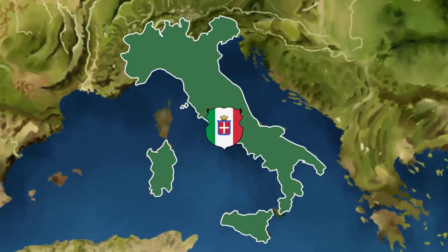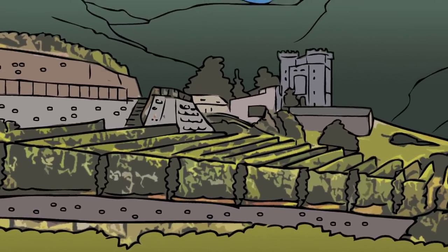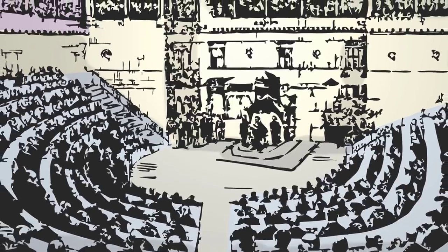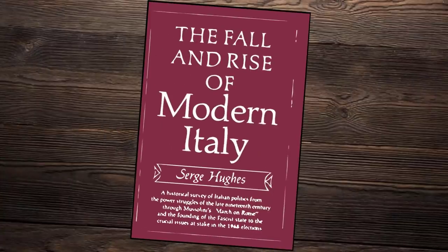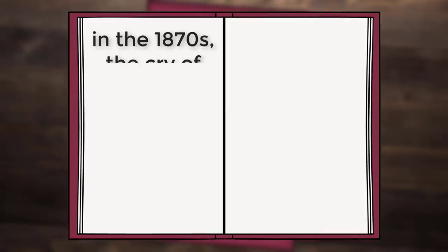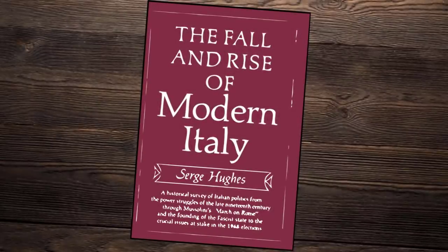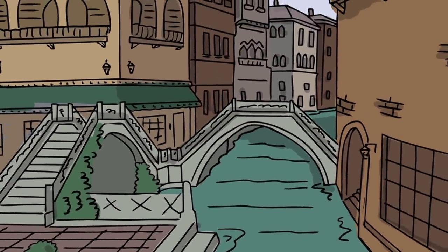After unification, the newly created State of Italy faced a number of roadblocks that stood in the way of progress. The majority of the middle class and aristocracy alike had never truly been won over by the revolutionary ideals that trickled down from France. In addition, the Italian Parliament experienced gridlock, as socialists and liberals failed to compromise on even the most basic pieces of legislation. To conclude, we'll cite Serge Hughes, a professor at Hunter College. He describes how, in the 1870s, the cry of Risorgimento leaders was, 'Now that we have made Italy, we must make Italians.' But decades passed, and Italians were still as disunited as ever. These issues would continue to plague Italy throughout the 19th century, and even today.